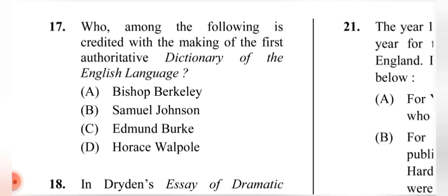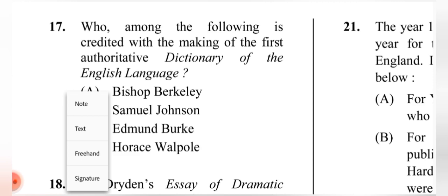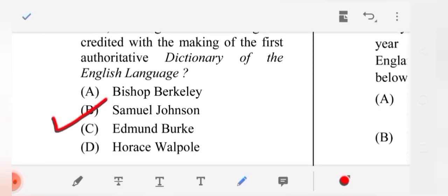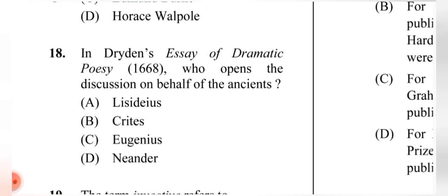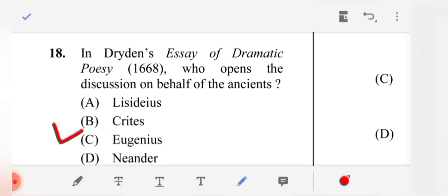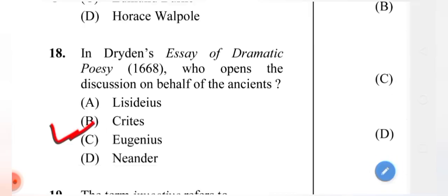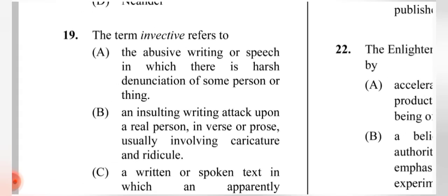Question 17: Who is credited with making the first authoritative dictionary of the English language? The correct answer is (B) Samuel Johnson. Question 18: In Dryden's 'Essay of Dramatic Poesy' (1668), who opens the discussion on behalf of the Ancients? The correct answer is (B) Crites.